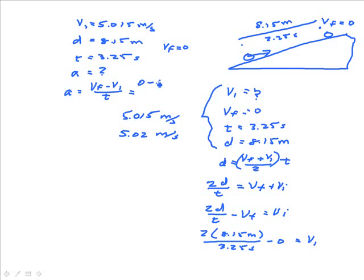And so we get zero minus 5.015 divided by the time, which is 3.25 seconds. And what we get is a is equal to, 5.015 negative divided by 3.25, and we get 1.543, we get 1.543 meters per second squared.